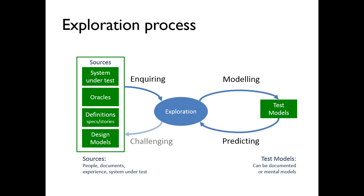An example would be: we read a requirement, sketch out some stories and examples, feed those examples back to users and ask 'is this how the system works?' The user might say that's exactly right, or that's exactly wrong, or 'I need to go away and rethink this because you've exposed a flaw in our thinking.' There's a cycle involved of enquiry, modelling, predicting, and challenging to refine the requirement — whether it's documented, on a sticky, or simply a verbal request. We challenge our requirements and we end up with trusted requirements as an outcome.